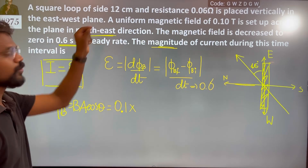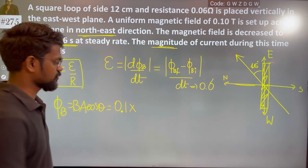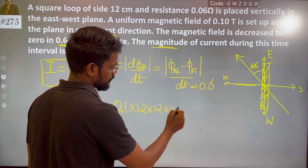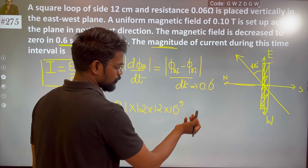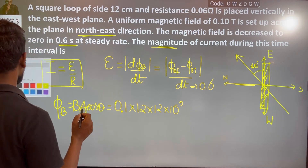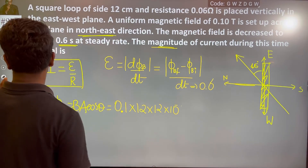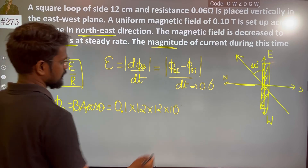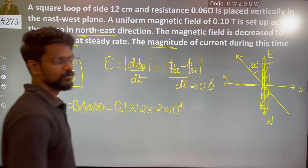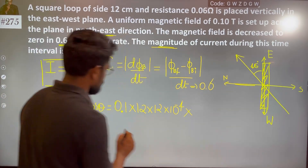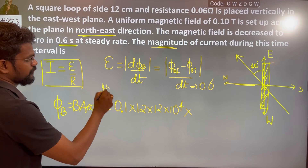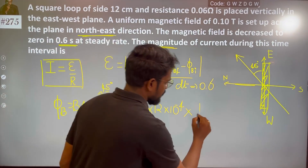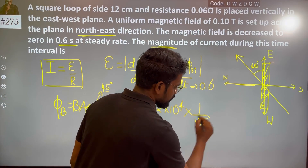The magnetic field B is 0.1. The area is square side: 12 × 12 × 10⁻² squared, giving 10⁻⁴. The initial angle is 45 degrees, and cos(45°) equals 1/√2. So the initial flux is 0.1 × 10⁻⁴ × (1/√2).